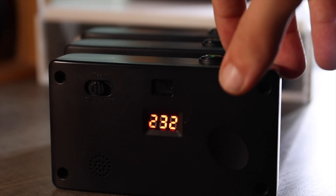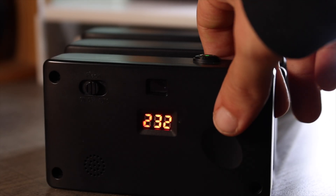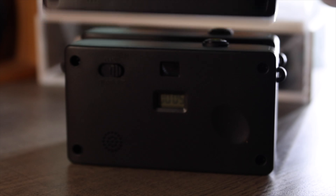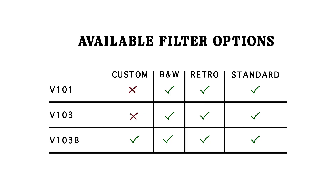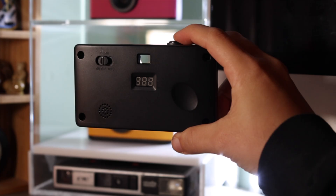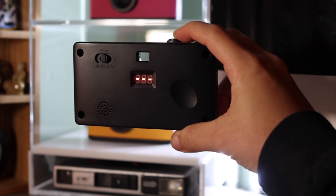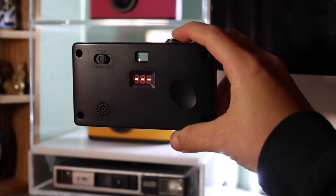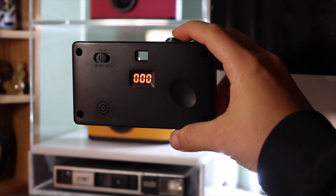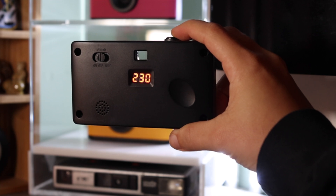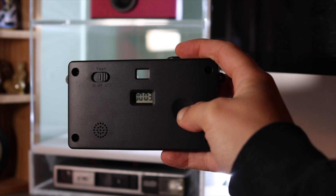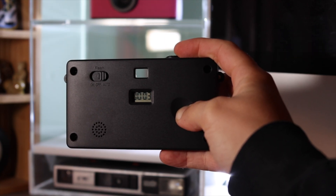Step 1: Check your camera to see which version you have. Custom filters can currently only be used on version 103B cameras. If your camera has the red LED screen, you have a version 101 camera and custom filters do not apply.